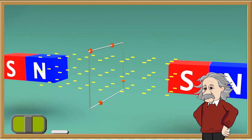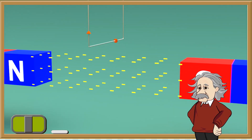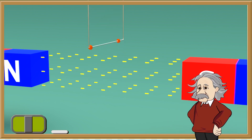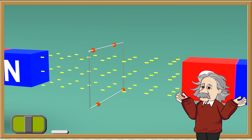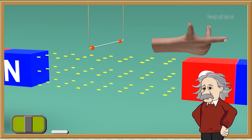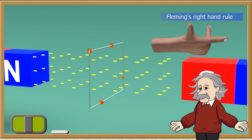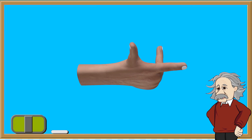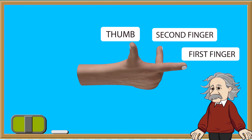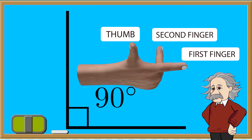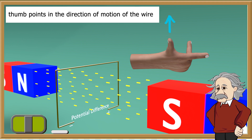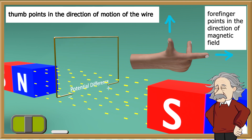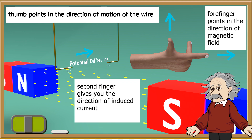If we go back to our diagram, we can see that if we move the wire through the magnetic field, then a potential difference is induced across the ends of the wire. To determine the direction of induced current, we can use Fleming's right hand rule. Place your thumb, first finger, and second finger in such a way that they are mutually perpendicular to each other. Your thumb points in the direction of the motion of the wire, your forefinger points in the direction of the magnetic field, and then the second finger gives you the direction of the induced current.